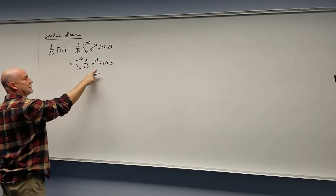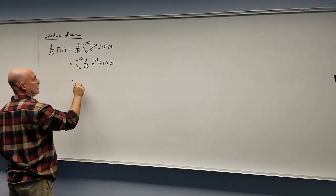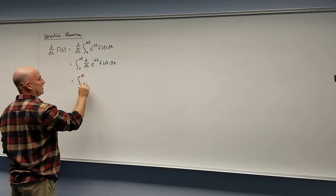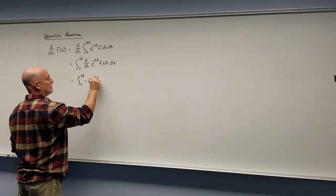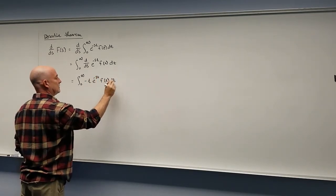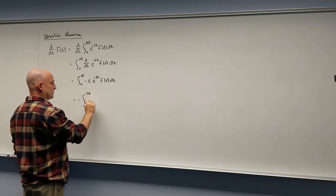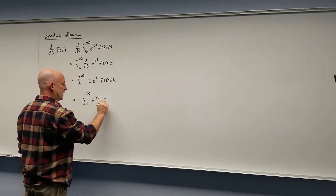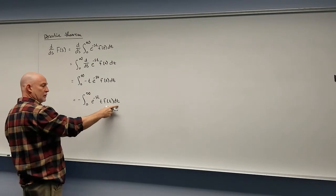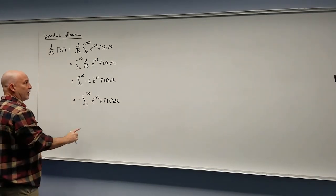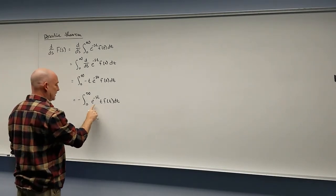Now remember, this is a derivative with respect to S. Almost all of this is T's except for the exponential. So when we take the derivative of that, we bring the derivative inside and get the integral from zero to infinity of negative T, e to the negative ST, f(t), dt. We go ahead and bring that negative out, and write this as e to the negative ST times T times f(t).